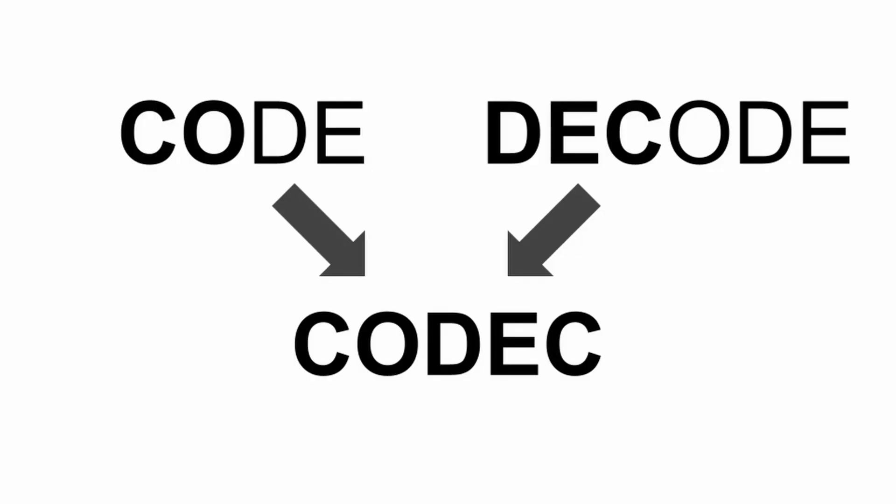Codec. This essentially refers to the code that we are converting to and converting from in the process of encoding and decoding. The word is simply a combination of code and decode. Examples of codecs that you may have heard of are H.264, HEVC, and ProRes. A codec is sometimes called a format — that may not be technically accurate, but for simplicity's sake, we'll say a codec is like a format.